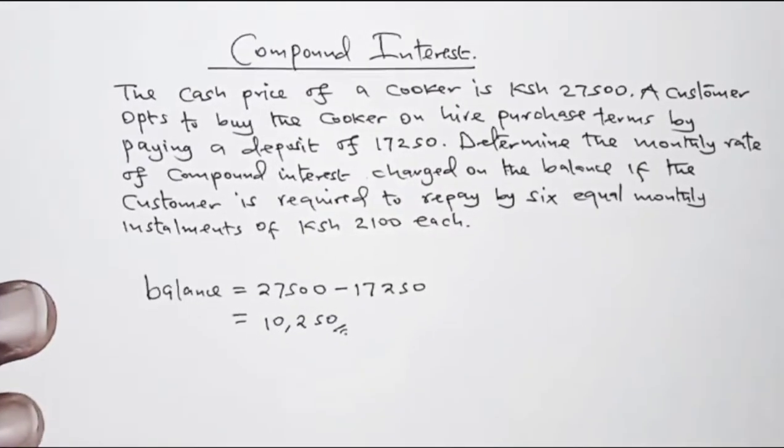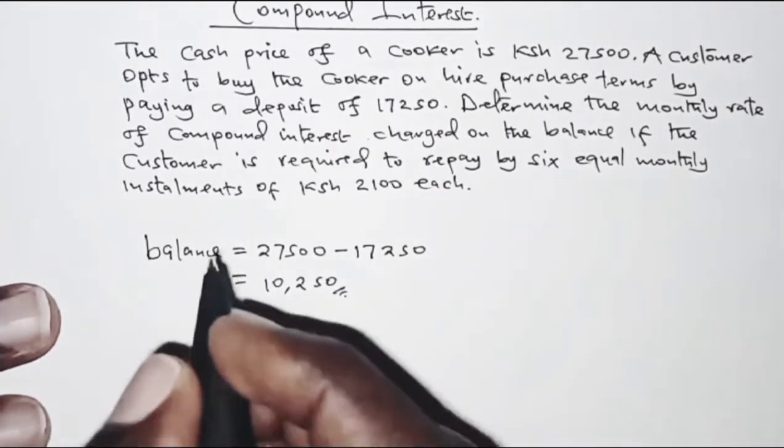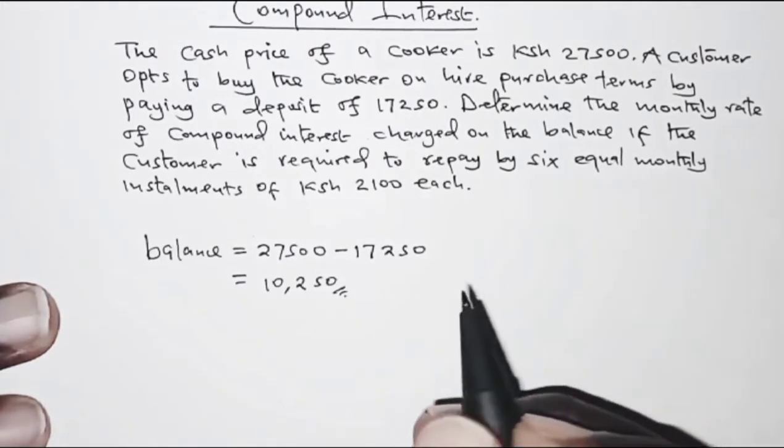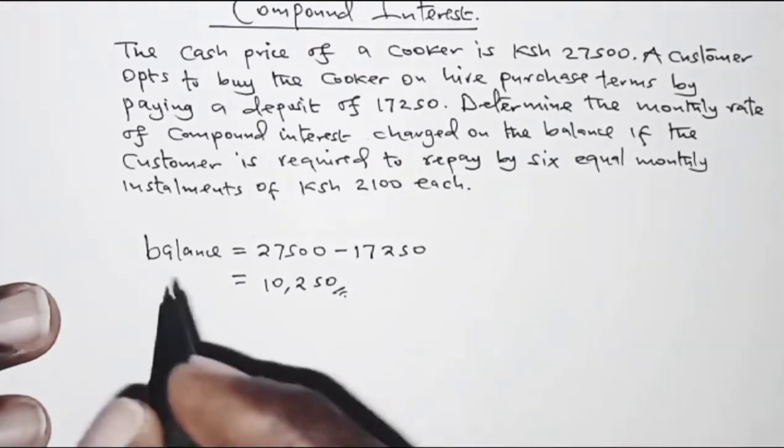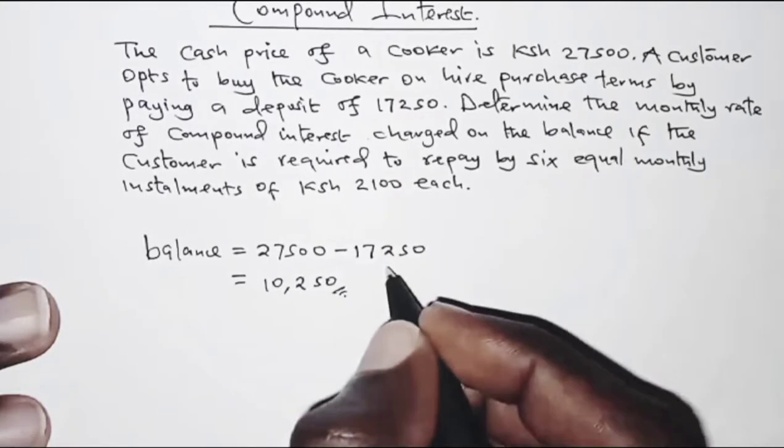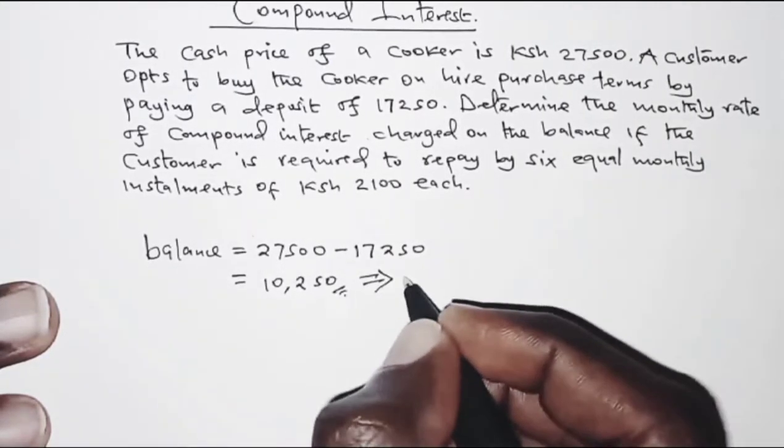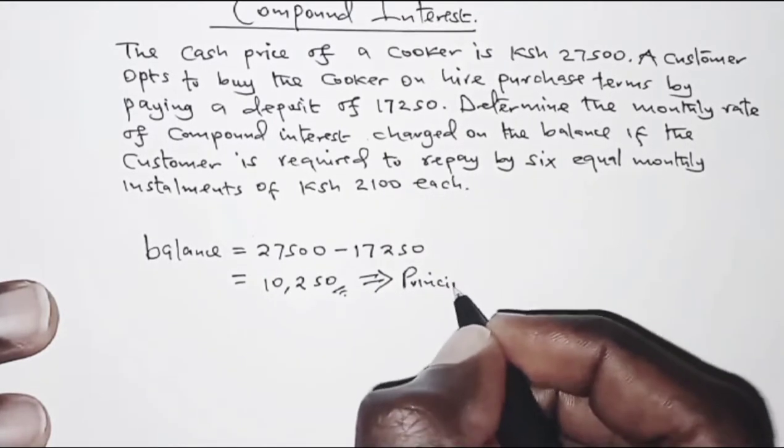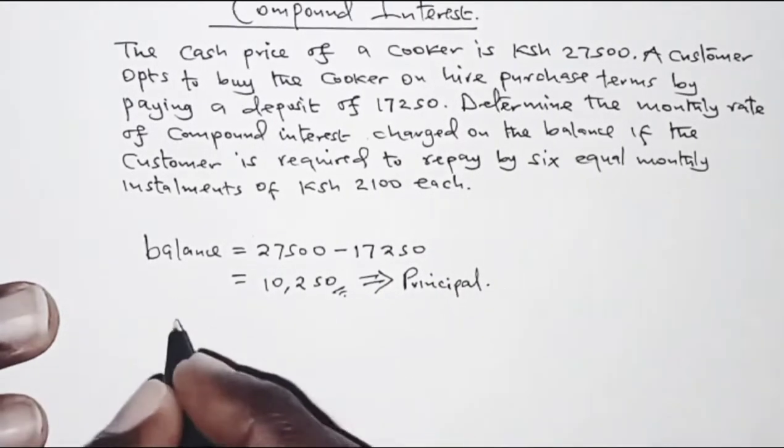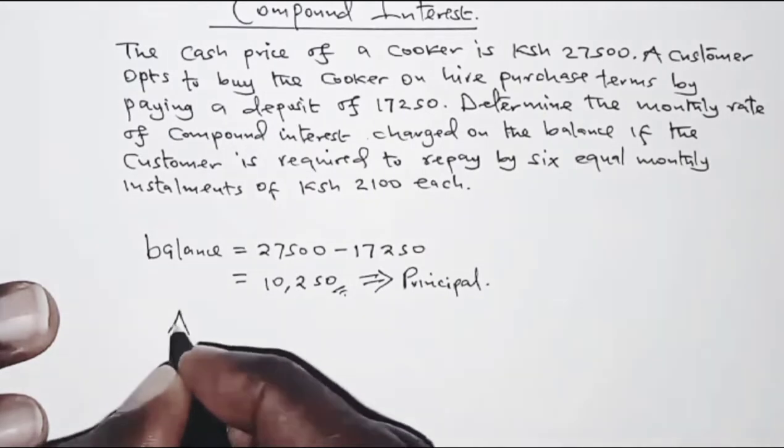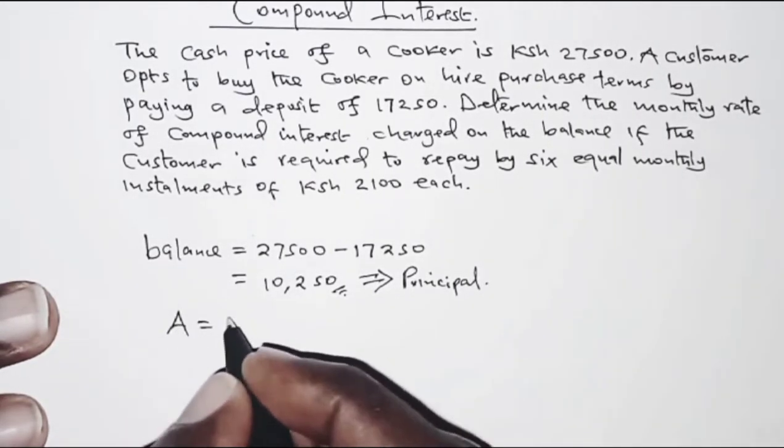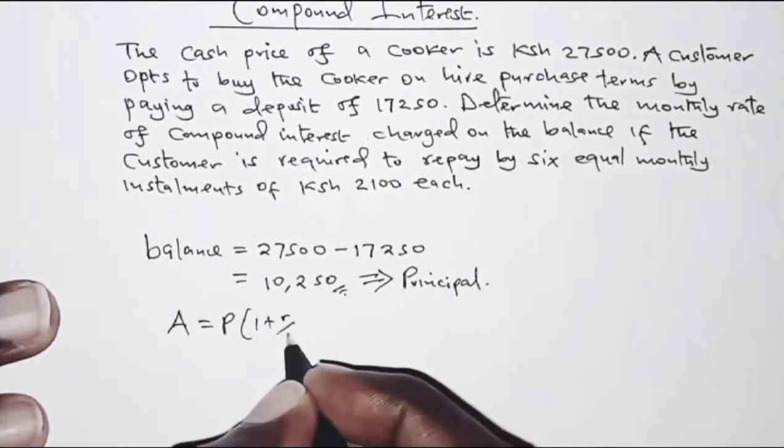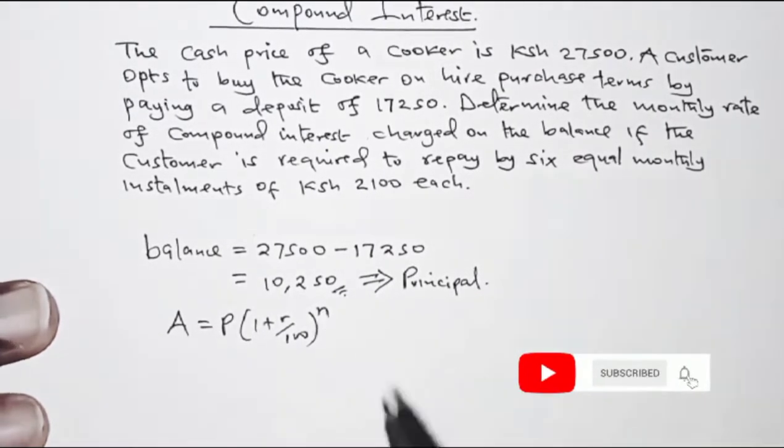So with that, we want to determine the monthly rate of compound interest charged on the balance. This balance here becomes our principal. We are going to use the compound interest formula which is: amount equals the principal times 1 plus rate over 100 raised to n.